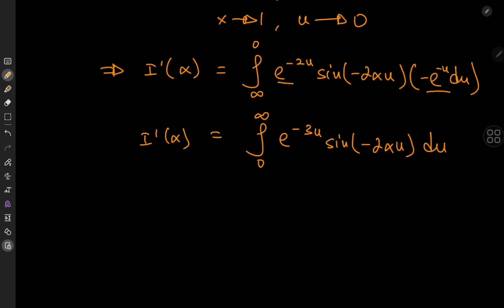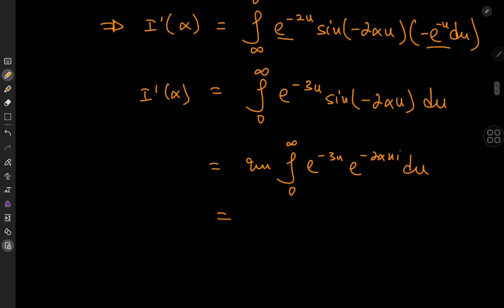Speaking of complex analysis, I've started teaching complex analysis on a second channel, so do check that out. Anyway, so we need the imaginary part of the integral from 0 to infinity of e to the negative 3u times e to the negative 2 alpha u i by Euler's formula. So multiplying the exponential terms and integrating gets us e to the negative, factoring out a u here I'm left with 3 plus 2 alpha i divided by 3 plus 2 alpha i with a negative sign, imaginary part needed, limits are 0 and infinity.